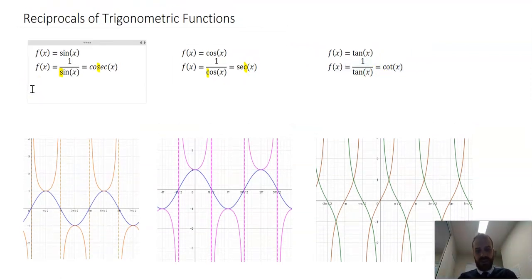It's actually called cosecant. This one's called secant, and this one's called cotangent. So that's where those abbreviations cot, sec, and cosec come from. So that's a brief introduction to our reciprocals of trig functions.